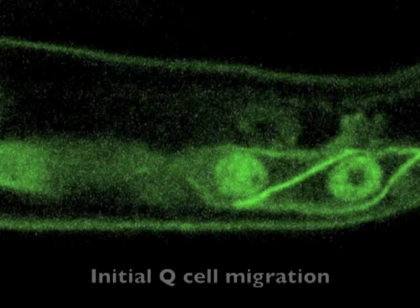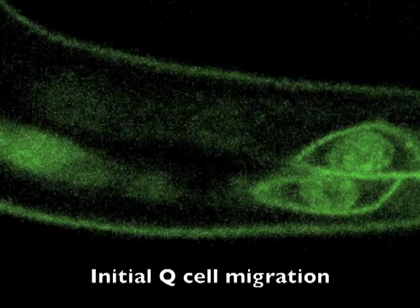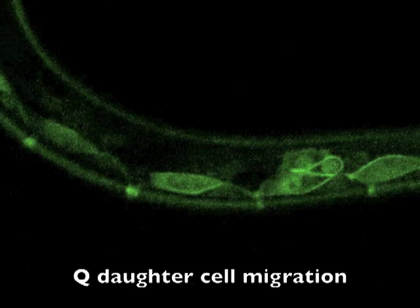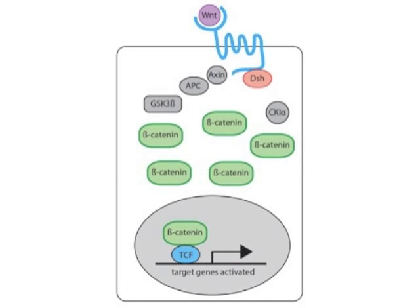Q-cell migration can be subdivided into two distinct phases: an initial Wnt-independent phase of migration, which is terminated by Q-neuroblast division, and a subsequent Wnt-dependent phase of Q-daughter cell migration. Canonical Wnt signaling is activated during this initial phase of migration, and this is necessary for proper migration of Q-daughter cells later on. Classic genetic studies have identified multiple conserved Wnt pathway components that result in activation of canonical Wnt signaling in the Q-neuroblast.